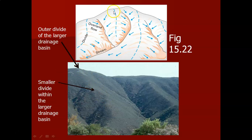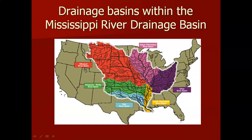Here's a nice diagram from the book showing the divide and overland flow feeding tributaries, illustrating this crazy hierarchy of drainage basins. Here's the drainage basin of the Mississippi River system — it drains 41% of the United States and is made up of a whole series of drainage basins within the larger one: the Ohio basin, the upper Mississippi, the Missouri, the Arkansas, the Red, and the Mississippi River itself.